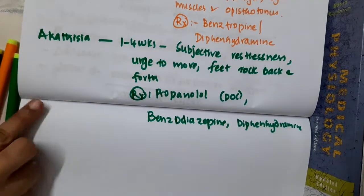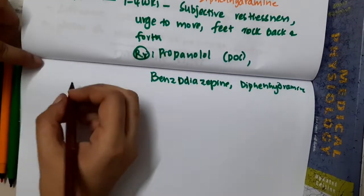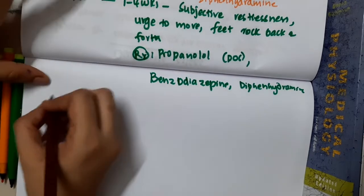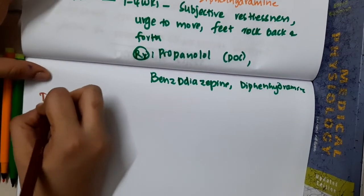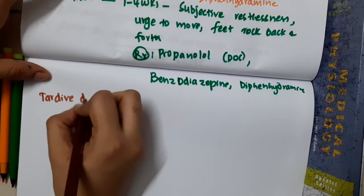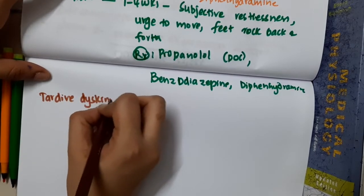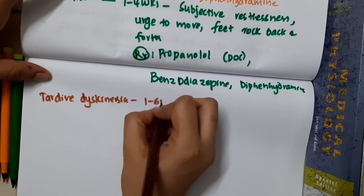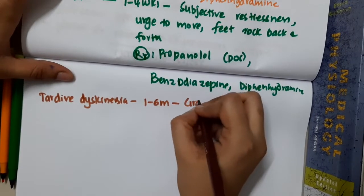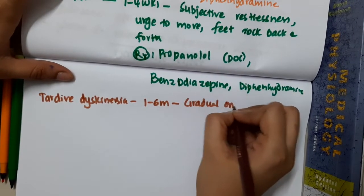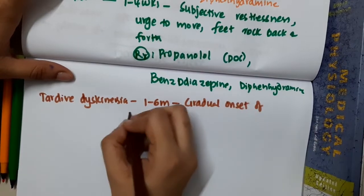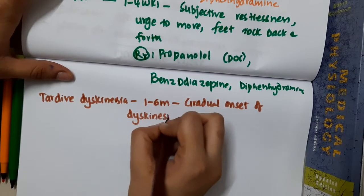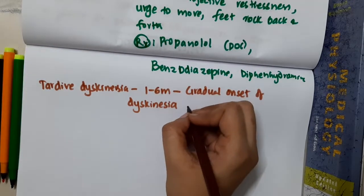If parkinsonism is seen, anti-Parkinson's drugs can be used. Then we have tardive dyskinesia, which occurs over one to six months with a gradual onset of dyskinesia.